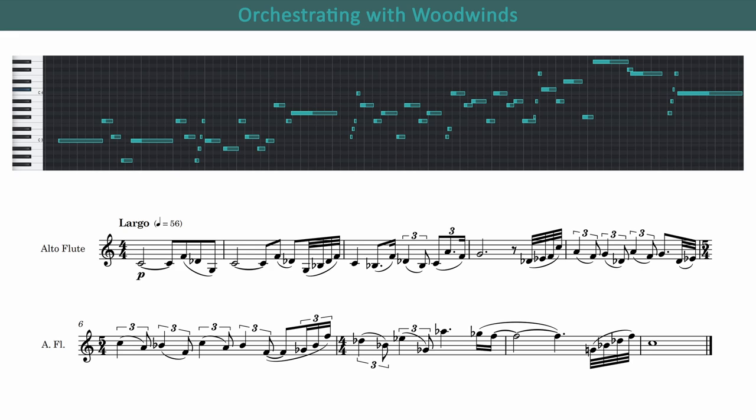So now I want to go from this alto flute melody to a much larger woodwind texture. As always, there are endless possibilities here, but in this video I want to try and extract as much information from the melody as possible, and I'll let that information inform things like harmony and texture. So what exactly do I mean by extracting information from the melody? Well, let me break that down into a few different musical elements.